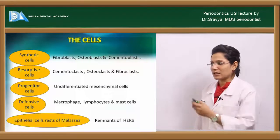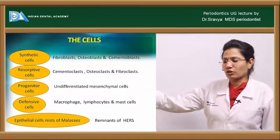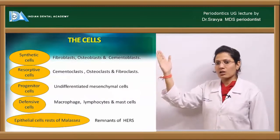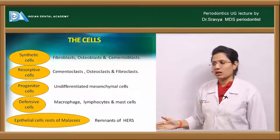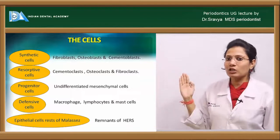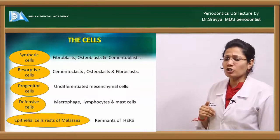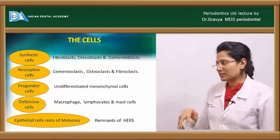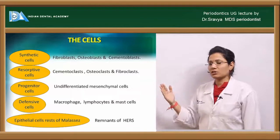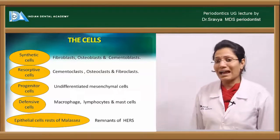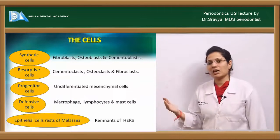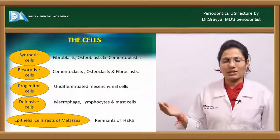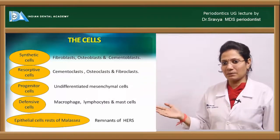The synthetic cells include fibroblasts, osteoblasts, and cementoblasts. The resorptive cells include fibroblasts, osteoclasts, and cementoclasts. The progenitor cells include undifferentiated mesenchymal cells. The defensive cells of the PDL include macrophages, lymphocytes, and mast cells. The last group of cells present in the PDL are the epithelial cell rests of Malassez, which are remnants of Hertwig's epithelial root sheath.